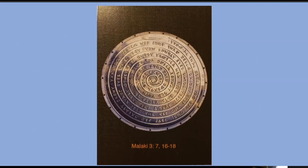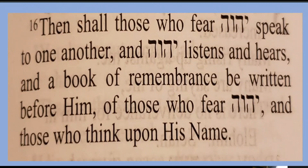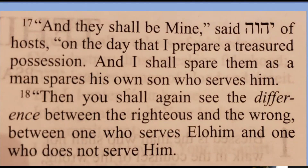Here we have a shield card, Malachi 3:7 and 16 through 18. It reads: 'For I am Yahuwah, I shall not change. And you, O sons of Jacob, shall not come to an end. From the days of your fathers you have turned aside from my laws, and did not guard them. Turn back to me, and I shall turn back to you, said Yahuwah of hosts.' Verse 16: 'Then shall those who fear Yahuwah speak to one another, and Yahuwah listens and hears, and a book of remembrance be written before him, of those who fear Yahuwah and those who think upon his name.' Verses 17-18: 'And they shall be mine, said Yahuwah of hosts, on the day that I prepare a treasured possession, and I shall spare them as a man spares his own son who serves him. Then you shall again see the difference between the righteous and the wrong, between one who serves Elohim and one who does not serve him.'